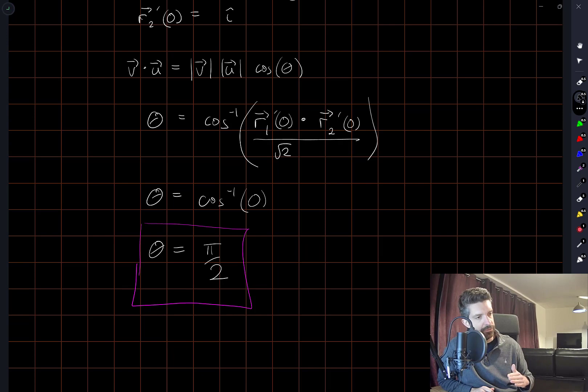And so if we want the angle of intersection, it's the same as taking the angle between two vectors which are tangent to each of the curves at the point of intersection. And then it's just understanding the dot product formula.